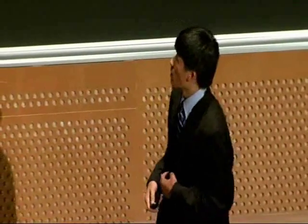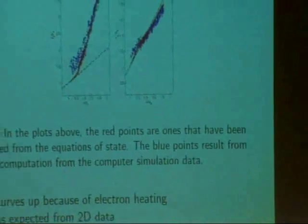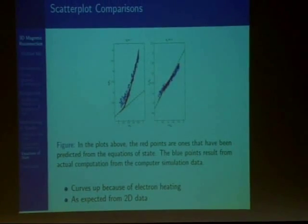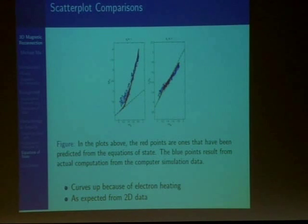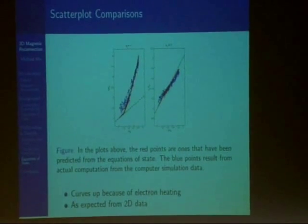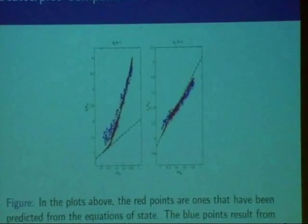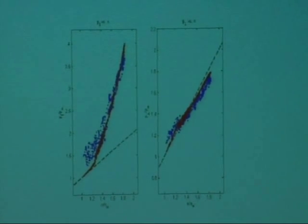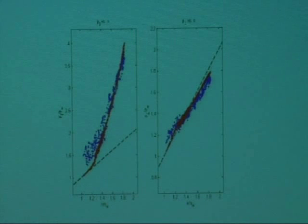Scatter plots comparing the components of pressure to the density were also created for certain field lines. In these plots, the red points are the ones predicted from the equations of state, while the blue points are the ones calculated numerically from the simulations. If you just look at the graph on left, which shows the parallel pressure, the points actually curve up. This is due to electron heating. But seeing how much the red and blue points overlap shows that the equations of state actually work pretty well in 3D.